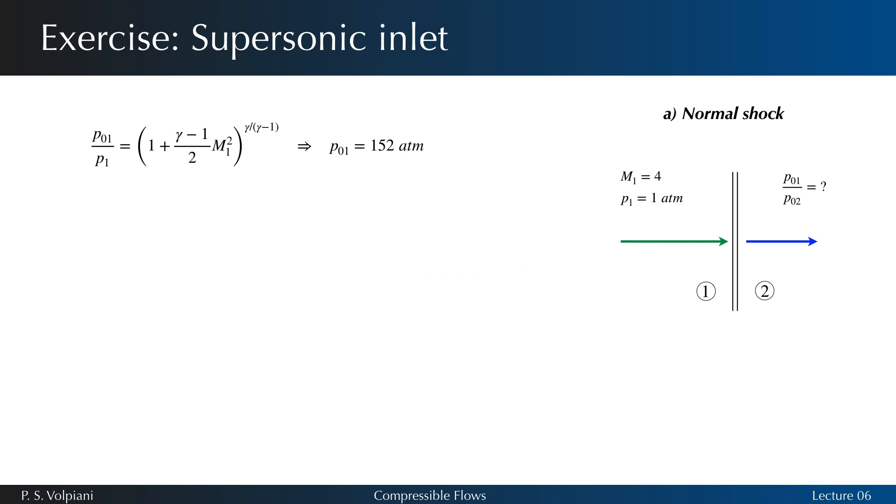To compute P02 after a normal shock, we need M2 and P2, both given by the following expressions. The ratio P01 over P02 in the first case equals 7.2.